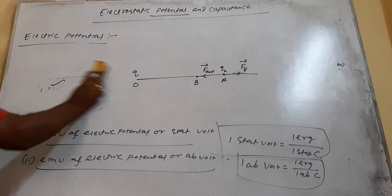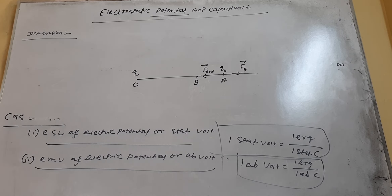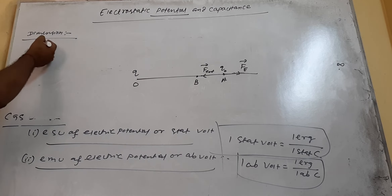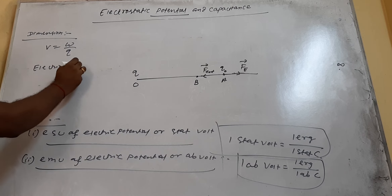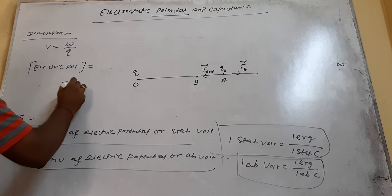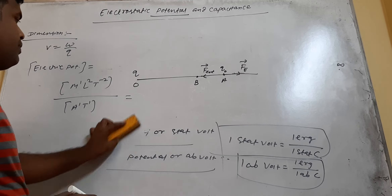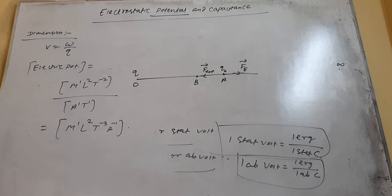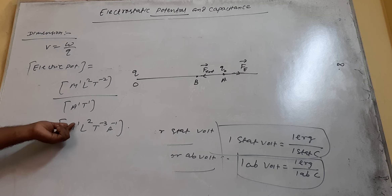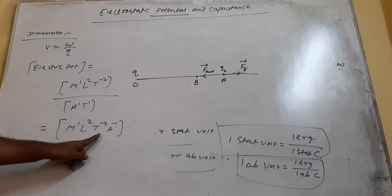Now come to the dimension of electric potential. The dimension of electric potential: V equals W divided by Q. The dimension of W is M¹L²T⁻², divided by the dimension of charge which is A¹T¹. Therefore the dimension of electric potential is M¹L²T⁻³A⁻¹. These are the dimensions in terms of mass, length, time, and current respectively.